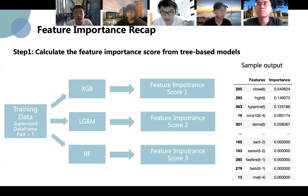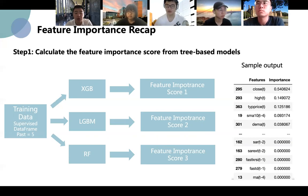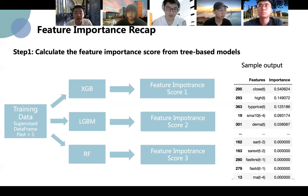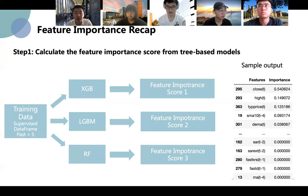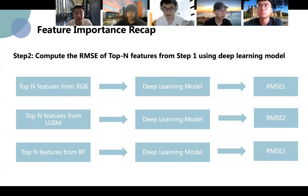For deep learning models, it is hard to distinguish the importance of each feature, but in machine learning models, we have mature functions to calculate the feature importance. So we decide to combine these feature importance results with deep learning model performance and propose a feature selection approach for financial data. We call it feature importance recap. The process includes three steps. In the first step, we create a supervised data frame from the training dataset and split it into new training and testing data, where each row contains all the data of the last five timestamps. Then we calculate the feature importance score using three tree-based machine learning models: AdaBoost, LightGBM, and random forest. The timestamp T to T minus four is included in the feature names. Then we use the selected features as input to the same deep learning model and compute the RMSE.